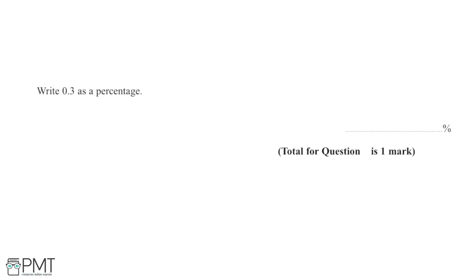In this question, we're asked to write 0.3 as a percentage. So this time we're going from a decimal to a percentage. To convert from a decimal to a percentage, we're going to multiply by 100 to take this decimal and get it into percentage form. So we have 0.3 multiplied by 100, and that gives us an answer of 30%.